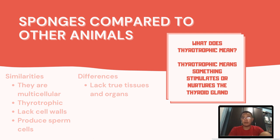Sponges are similar to other animals in that they are multicellular, heterotrophic, lack cell walls, and produce sperm cells. But unlike other animals, they lack true tissues and organs. Some of them are radially symmetrical, while some of them are mostly asymmetrical.